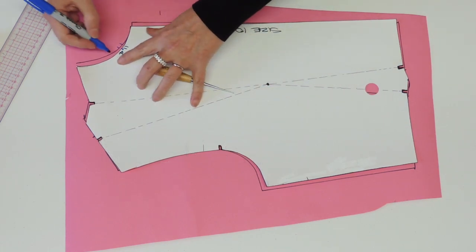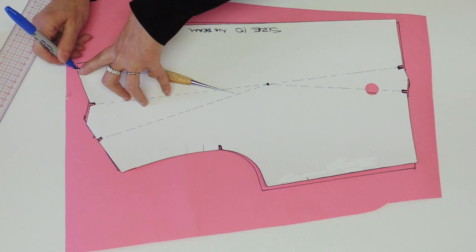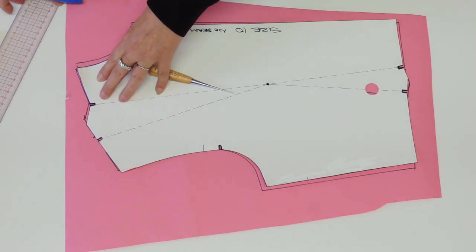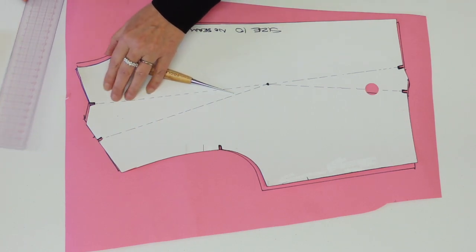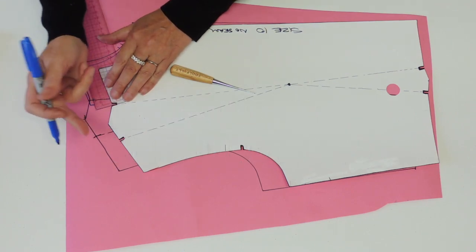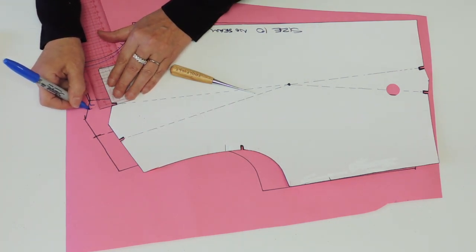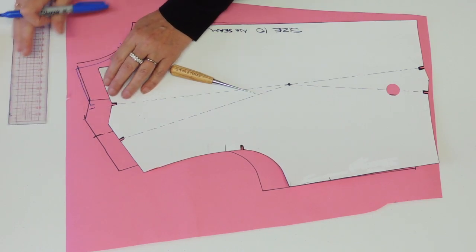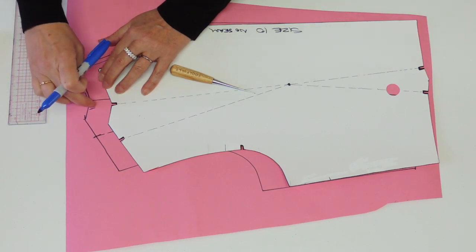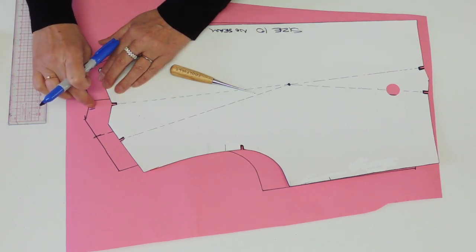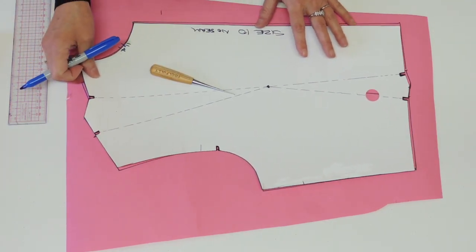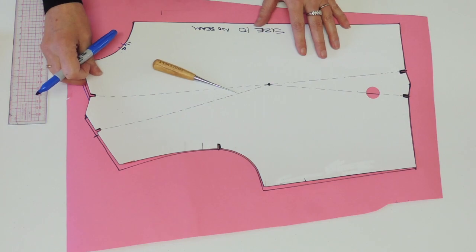Then from there, you're going to trace until the first side of the dart. And you're going to measure from that notch towards the side seam, five millimeters. So five millimeters is pretty much the ease of the back. So I'm going to leave five millimeters of the dart at the front shoulder so it's going to be even with my back shoulder.